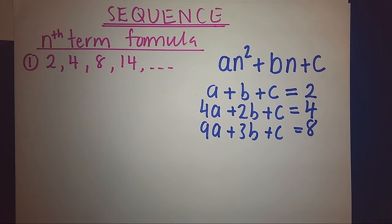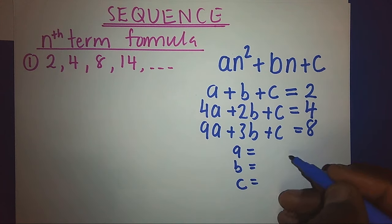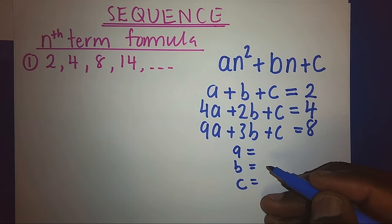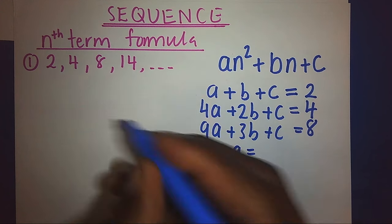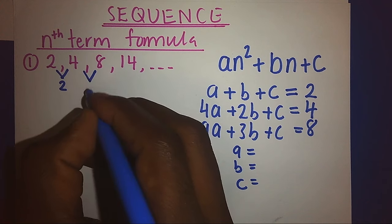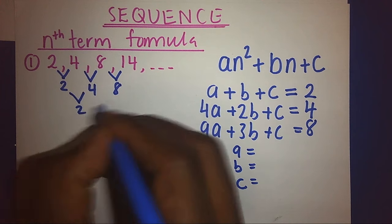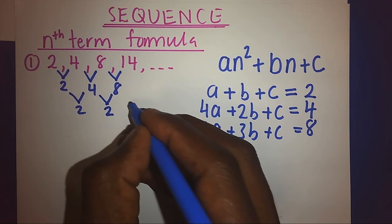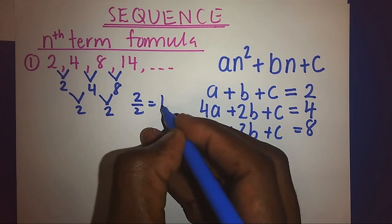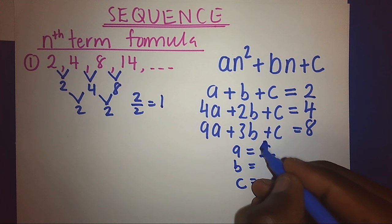Now I have formulated 3 equations with 3 unknowns: a, b, and c. I can use a calculator to solve them simultaneously. But if I don't want to use a calculator, I can do it manually. First, I can find the value of a by getting the differences from term to term and then getting the second difference. Once the second difference is the same, I divide by 2 — that gives me a = 1.